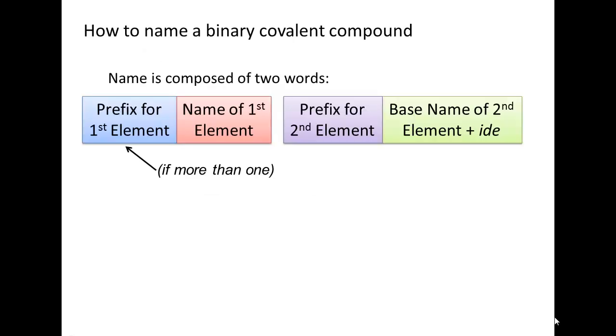So how do you name a binary covalent compound? This is pretty much the simplest way to name a compound. A lot of students love the covalent system because it is so easy. Yay! Something easy! So here's how we name it. First, you have two names.